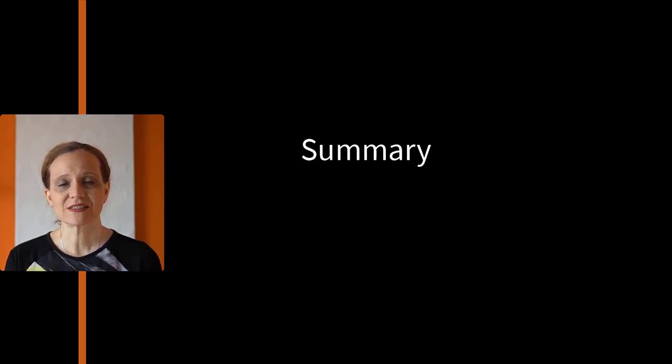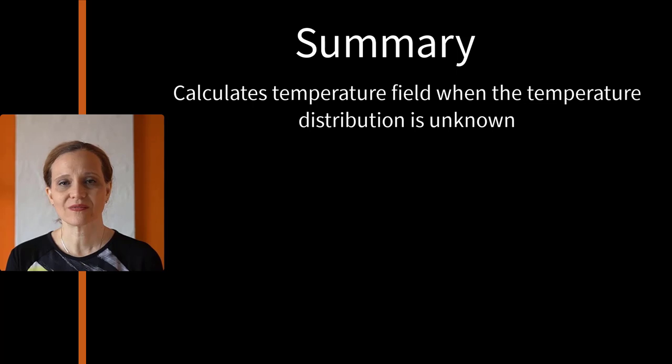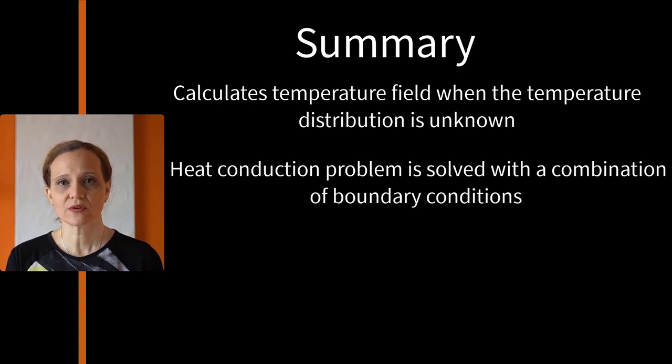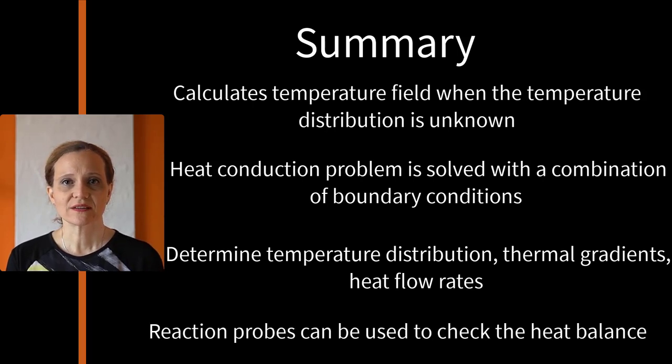Now, let's summarize what we learned in this video. Steady state thermal analysis is used to calculate the temperature field when temperature distribution is unknown. In many cases, the heat conduction problem is solved with combination of boundary conditions such as specified temperature, convection, heat flow and so on. The results of thermal analysis can be used to determine temperature distribution, thermal gradient, heat flow rate in an object that are caused by thermal loads that do not vary over time. Reaction probes can be used to check the heat balance of the steady state heat transfer problem.